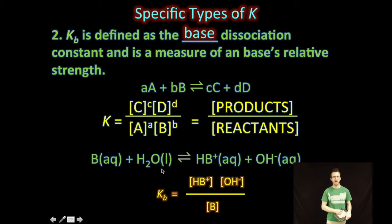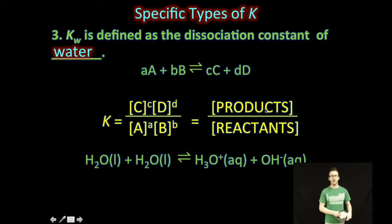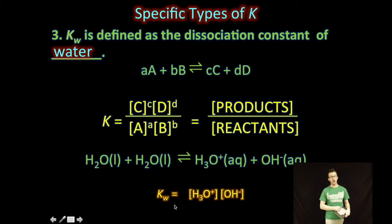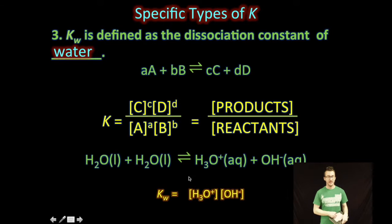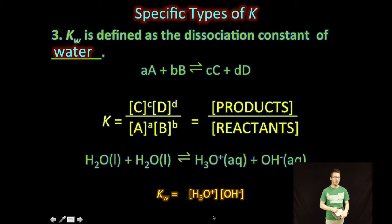Keep in mind we leave out water because it's a pure liquid, which isn't included in our equilibrium constant expression. The third one is Kw, the dissociation constant of water. For Kw, only the products are expressed in the equilibrium constant because those are the only aqueous species that can have concentrations. The reactants are pure liquids and are not included in the equilibrium constant expression.